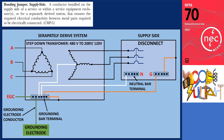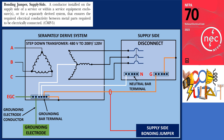A supply-side bonding jumper is a conductor installed on the supply side of a service or within service equipment enclosures, or for a separately derived system, that ensures the required electrical conductivity between metal parts required to be electrically connected. Equipment such as metal enclosures, raceways, and cable trays that are part of the supply-side conductors need to be bonded. For example, in the illustration of a wiring arrangement for dry-type transformers, the bonding conductors connecting the grounding bar terminal of a separately derived system to the first disconnect are considered supply-side bonding jumpers. Additionally, the bonding at the first disconnect enclosure is also a supply-side bonding jumper.